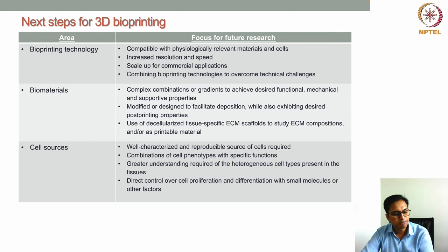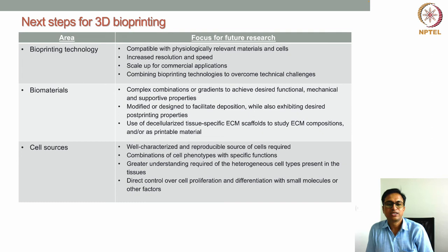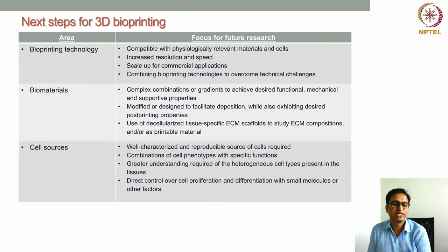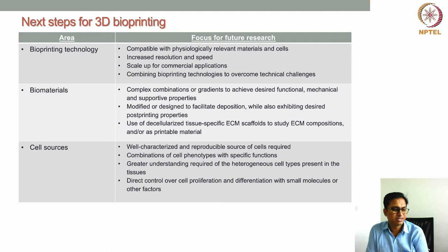We collect different tissues and use a decellularization process to remove the cells — since cells are mostly immunogenic — and use the remaining ECM material, which is self-supportive and can direct stem cell differentiation. We have developed a technology by which this decellularized ECM material can be used to develop bioinks for bioprinting of different tissue structures, which can help guide tissue growth in a particular way.